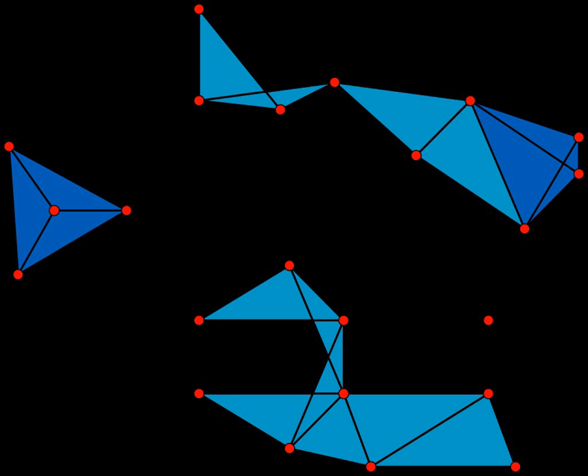Power graph analysis is a method for simplifying complex biological networks by finding cliques and related structures in these networks.